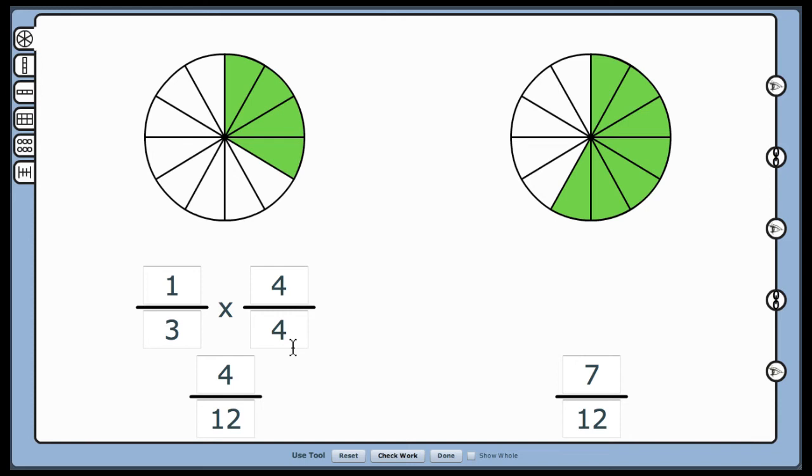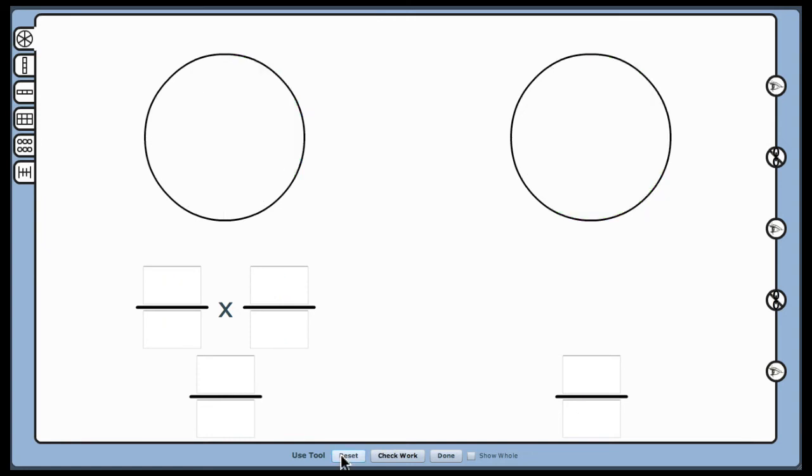We know that the number three in the first denominator is a multiple of twelve, and that three times four equals twelve. Since we know that to find the common denominator we multiply a fraction that equals one, we multiply by four-fourths. Clicking the reset button lets me do another problem.